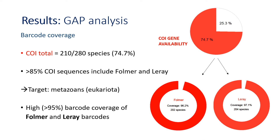Within the COI gene, the two most common barcodes are Folmer and Leray. When doing metabarcoding studies, we don't use the whole gene but short regions called barcodes. COI sequences were available for 210 species, and of these, 202 showed matches for Folmer and 204 for Leray — a high barcode coverage for both. However, these barcodes are considered universal for eukaryotes, so they are not fish-specific barcodes.